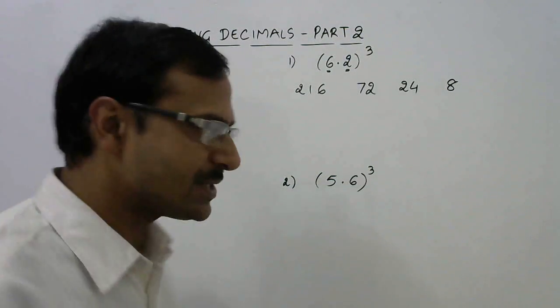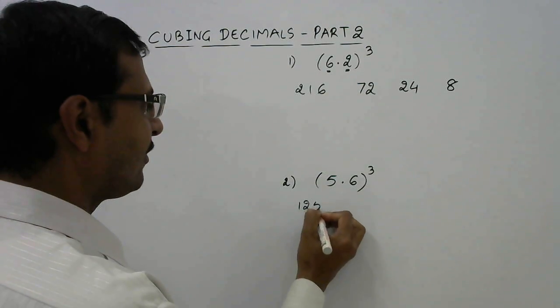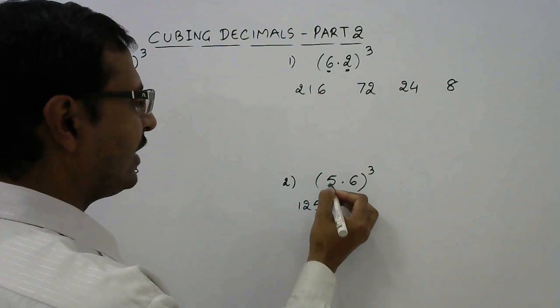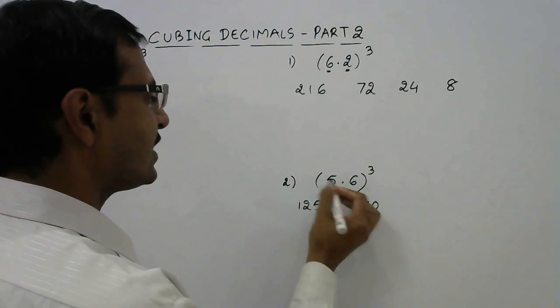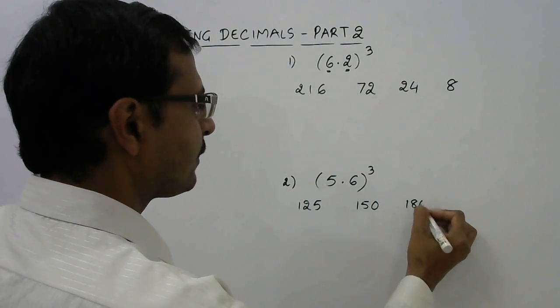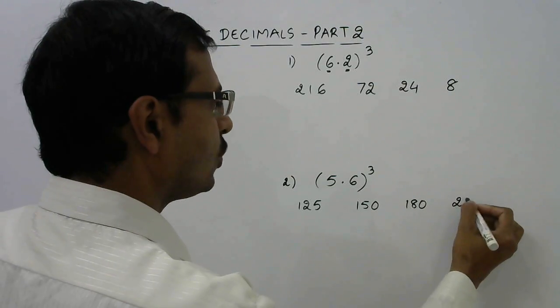5 cube is 125. 5 square is 25, 25 into 6 is 150. 6 square is 36, 36 into 5 is 180. 6 cube is 216.